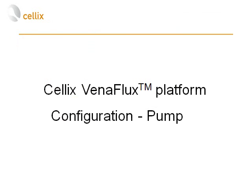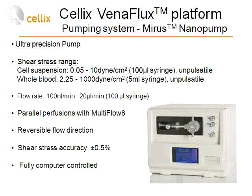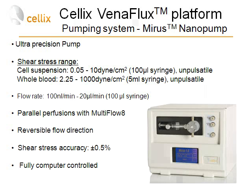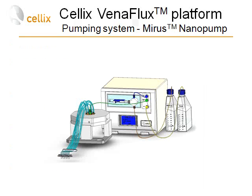The next option for the Vinoflux platform is the pump. The platform comes with a Myers pump — an ultra-precision pump which allows control of shear stress with different samples and cell suspensions, including whole blood. It ranges from very low shear stress of 0.05 dynes per square centimeter up to 1000 dynes per square centimeter. The flow rate is variable depending on the range and settings in the software. It allows parallel perfusions with multi-fluidics and is fully computer controlled, connected to a reservoir of culture media and a multi-fluidic connector allowing attachment of a standard Vina8 biochip to control all 8 channels in parallel.